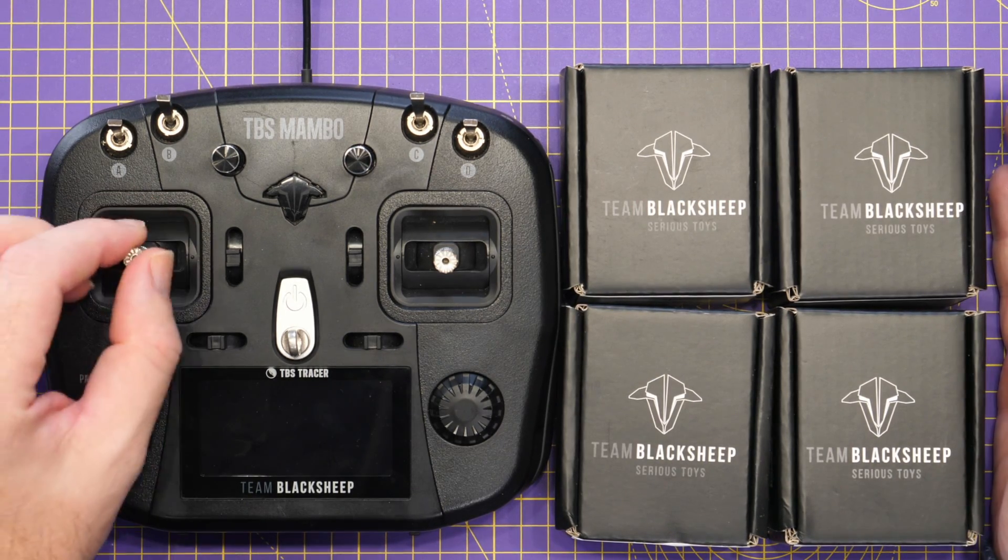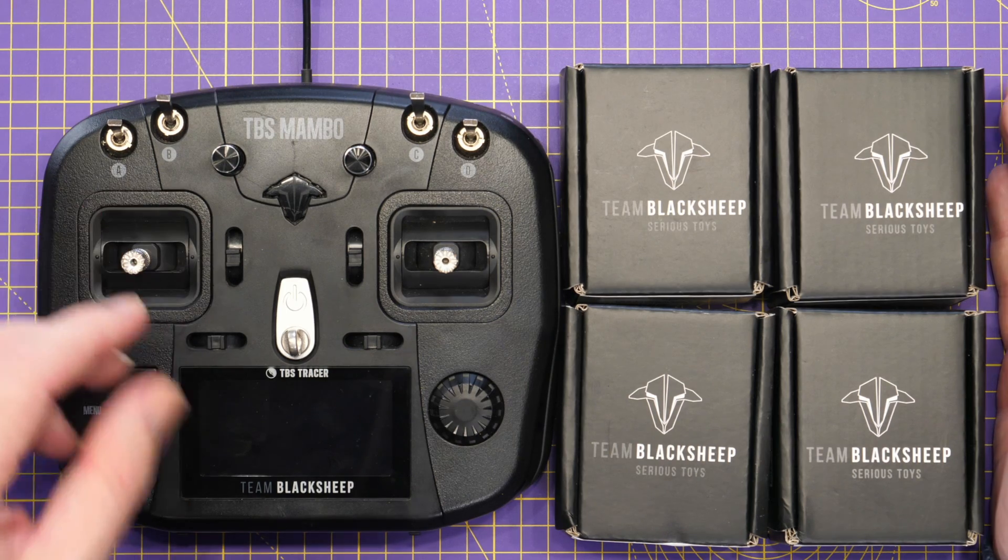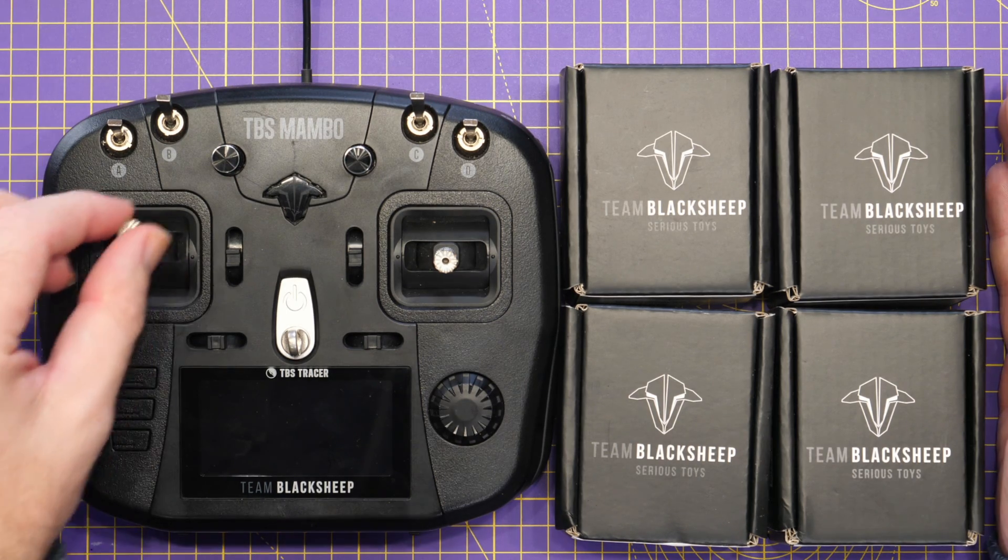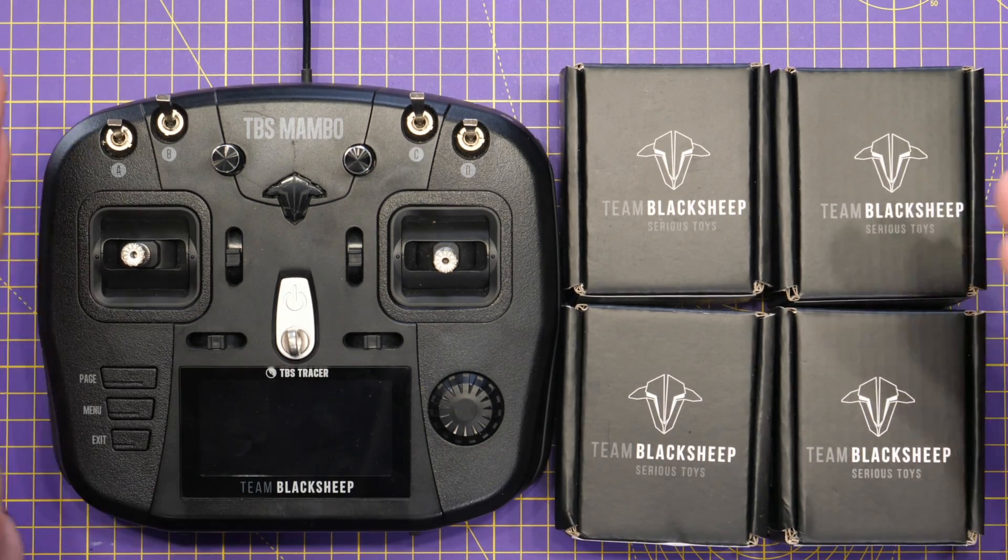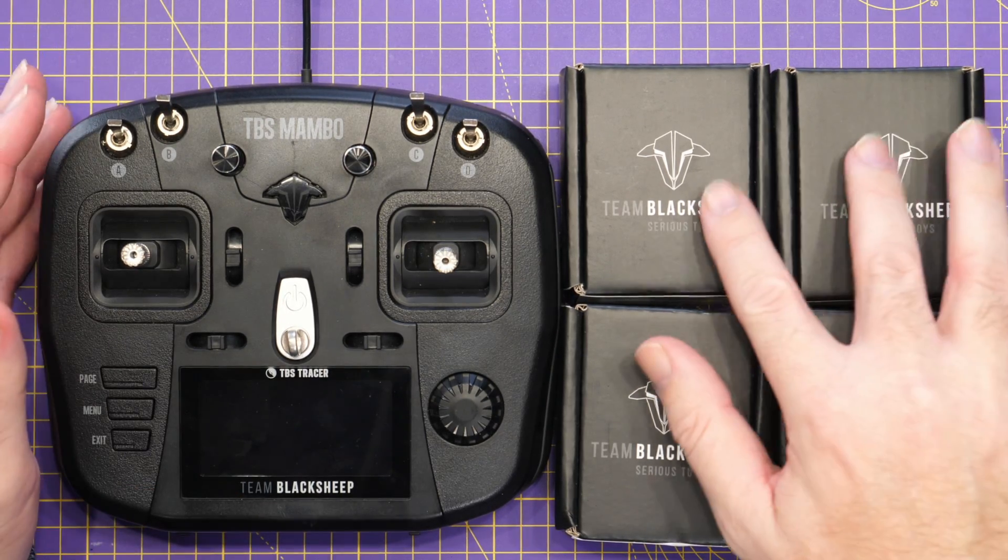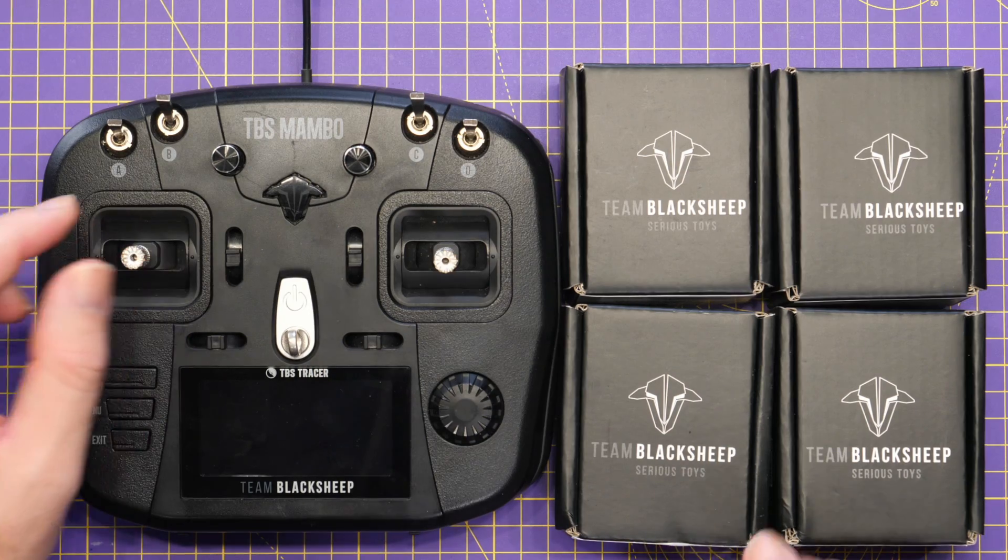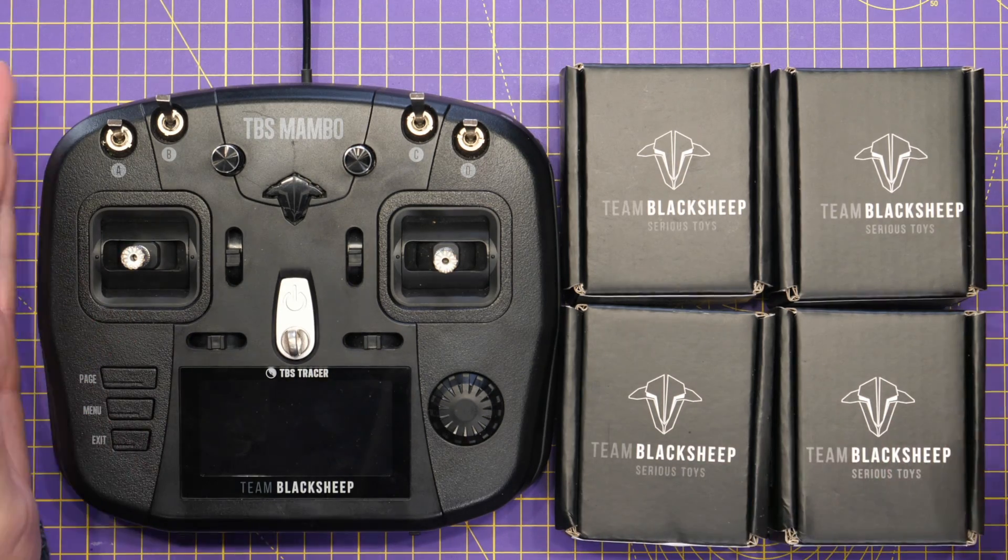Now when this released it came with the standard gimbals. TBS did make the Pro version as well with the folding sticks but they've now released a new version 2 of those gimbals. We have the version 2 of the standard gimbal I've got here and the version 2 of the Pro which I ordered as well.